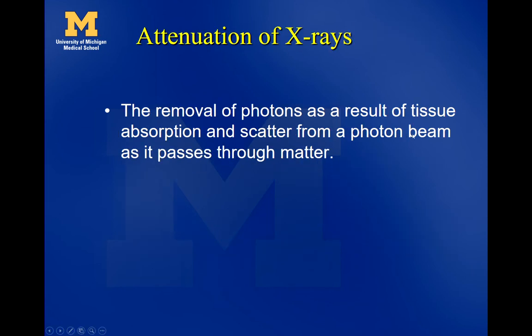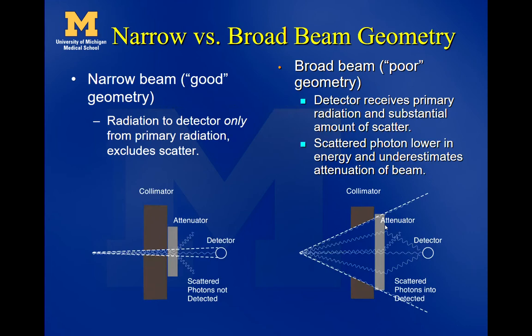The attenuation of x-rays is the removal of photons from a beam as a result of tissue absorption or scatter as it passes through matter. What attenuation looks like to us as a user depends on whether we have a narrow beam or broad beam geometry.